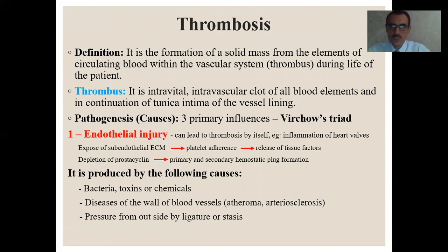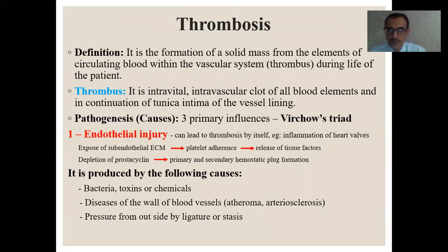Now let us discuss about thrombosis. Thrombosis is the formation of a solid mass from the elements of circulating blood within the vascular system, during the life of the patient. Thrombosis is intravital and intravascular — a clot of all blood elements in continuity with the tunica intima of the vessel lining. There are three primary influences or causes of thrombosis — what we call Virchow's triad. First is endothelial injury, which can lead to thrombosis by itself, for example inflammation of heart valves.